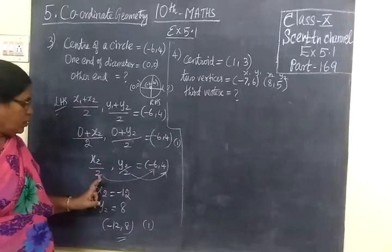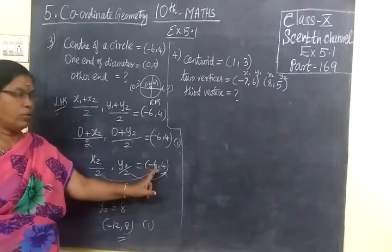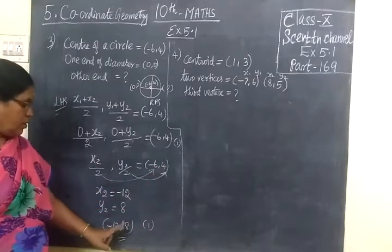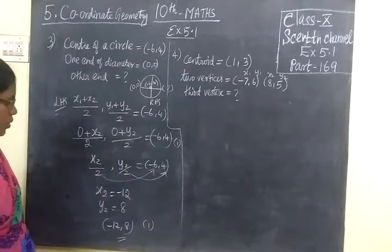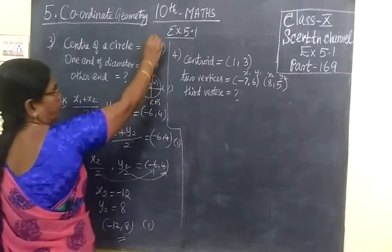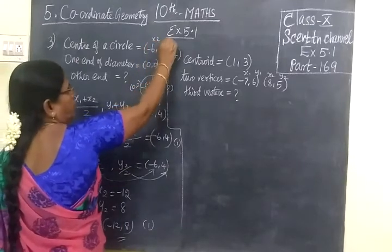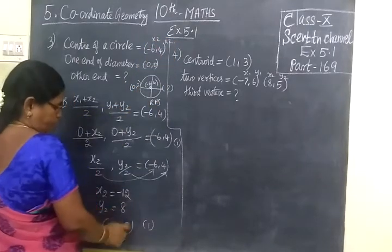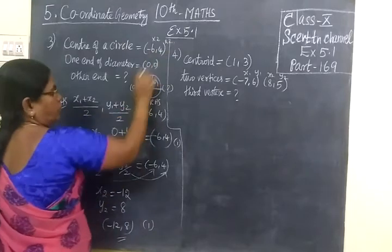Now you are substituting x1, y1 value. Then 2 is in the denominator. When it goes this side you are multiplying. The answer is (-12,8). Here itself you know that you are multiplying by 2. Shorter path: -6 multiply by 2 is -12, 4 into 2 is 8.